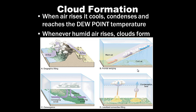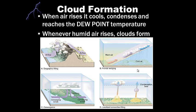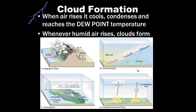Cloud formation: when air rises, it cools, condenses, and reaches the dew point temperature. Whenever humid air rises, clouds form. There are four ways we can make air rise: orographic lifting, frontal wedging, convergence, and localized convective lifting.